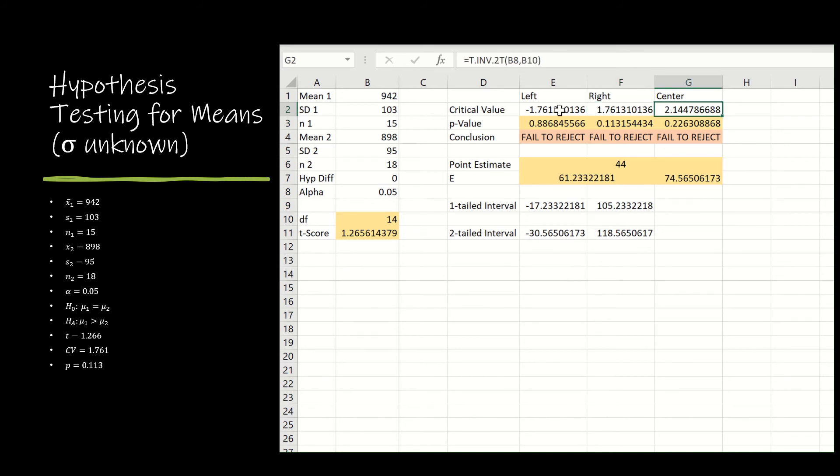And then for a two-tailed test, I don't know why it says center, it should say two-tailed, sorry. For a two-tailed test, I can use the handy t inverse two-tail function, again, of alpha comma the degrees of freedom.